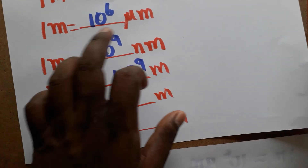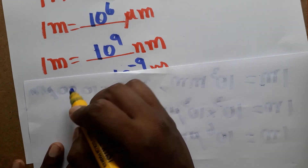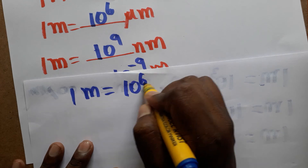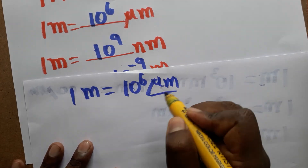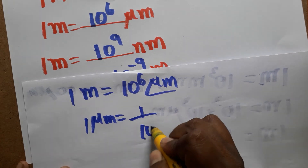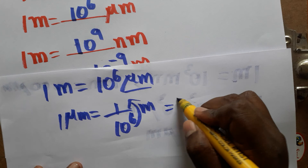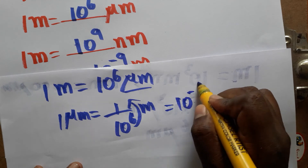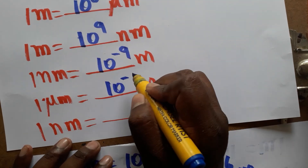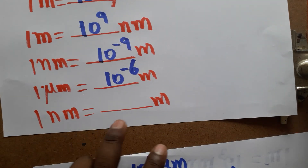Now, 1 micrometer is equal to how many meters? We know 1 meter is 10 power 6 micrometers. So 1 micrometer equals 1 divided by 10 power 6 meters. Bringing from the denominator to the numerator, it becomes 10 power minus 6 meters.